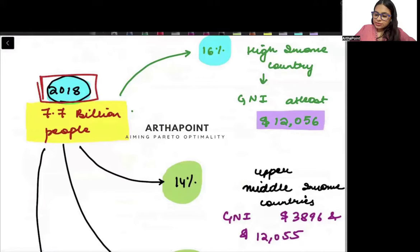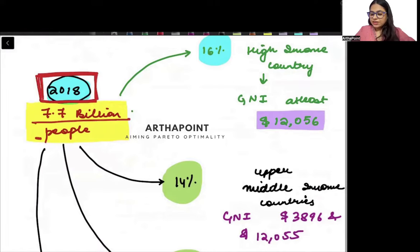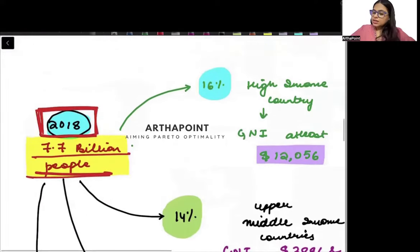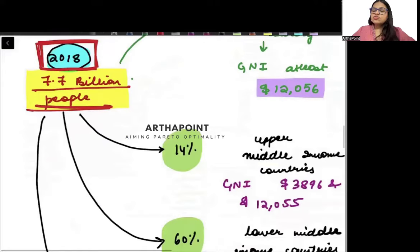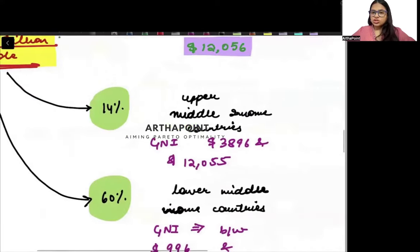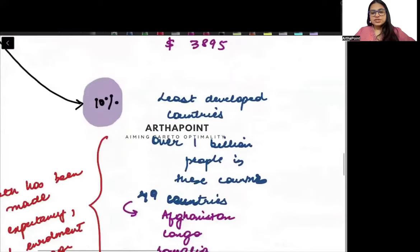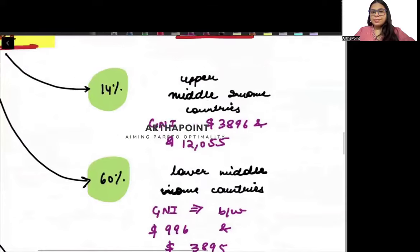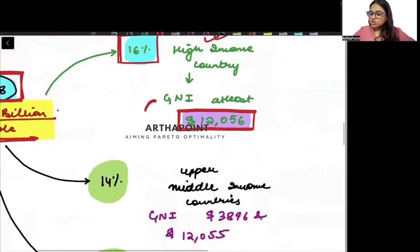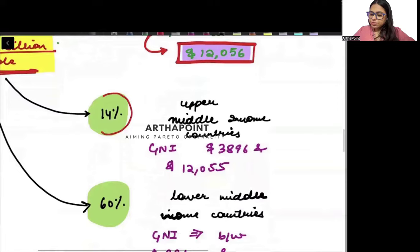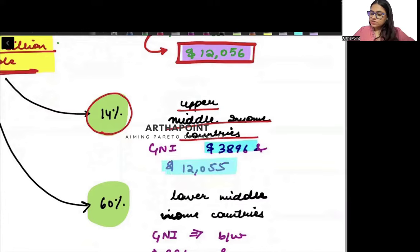According to 2018 data, if there are 7.7 billion people, then 16% live in high income countries. High income countries are those whose Gross National Income per capita is above $12,056. Then 14% of the people are in upper middle income countries, whose GNI per capita is between $3,896 and $12,055.